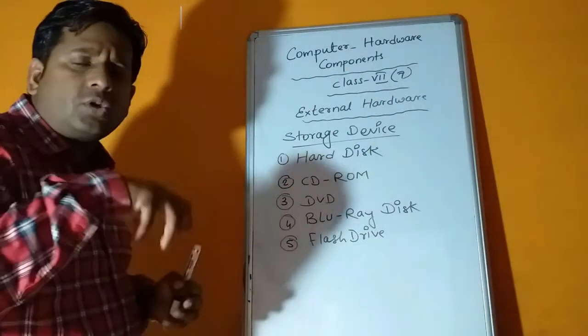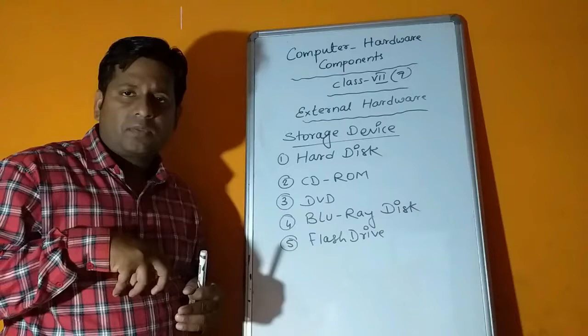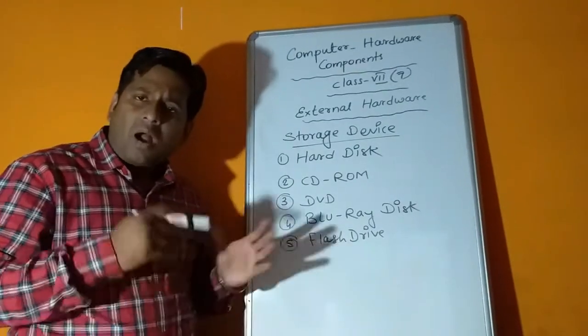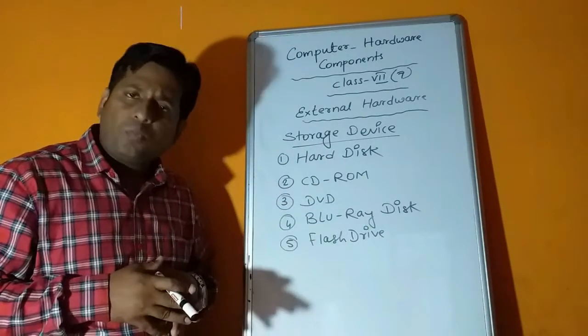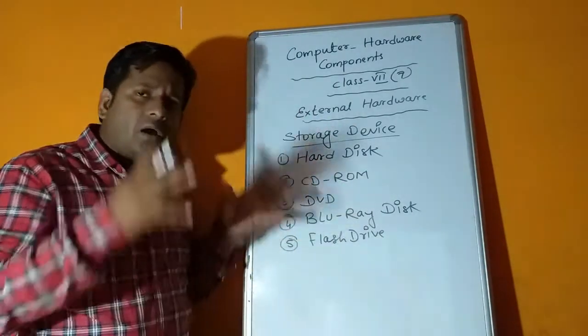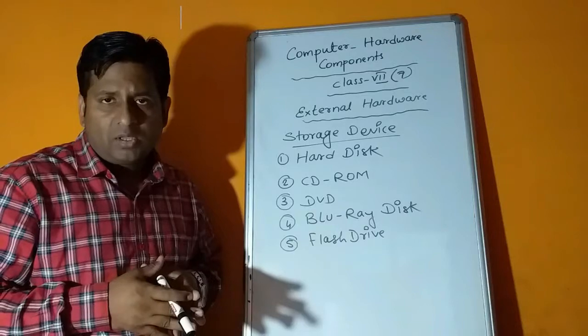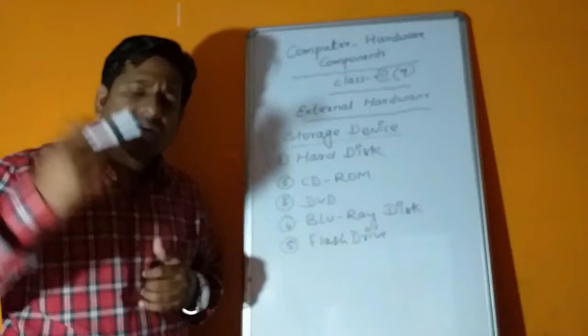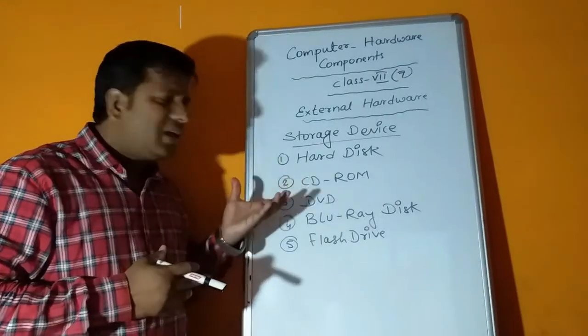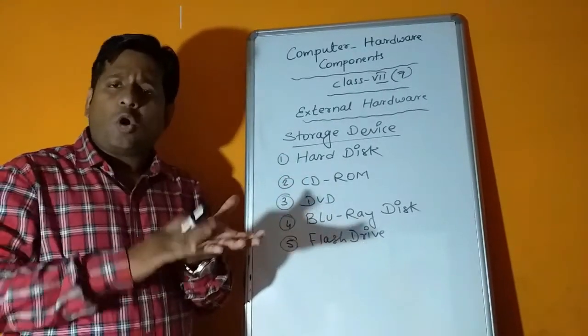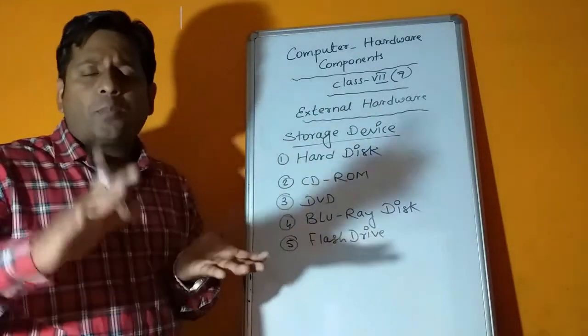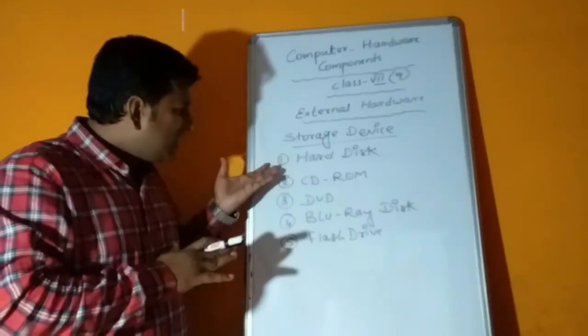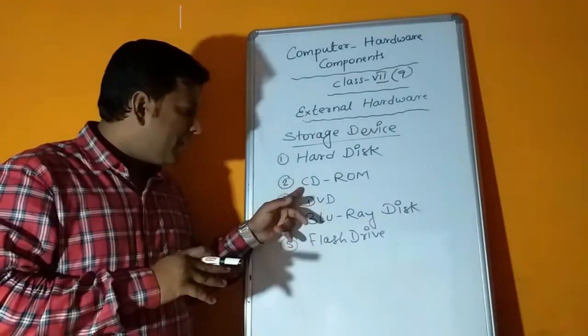Next type we have is storage device. Storage devices are devices which are used for storage. We can store data or information. First part is hard disk. Hard disks are fixed inside the CPU box. They are used for large storage, can vary up to one terabyte, even two terabytes or eight terabytes. Hard disks are used to store all the hardware applications and even operating systems of computer.